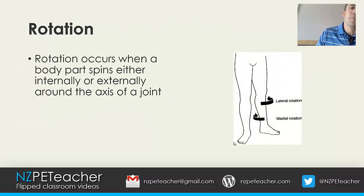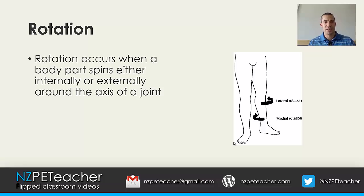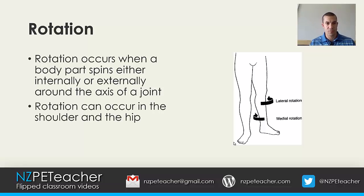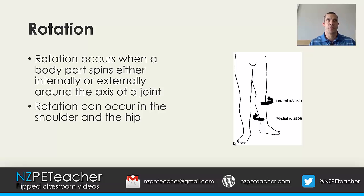Rotation occurs when a body part spins either internally or externally around the axis of a joint. Rotation can occur in the shoulder and the hip.